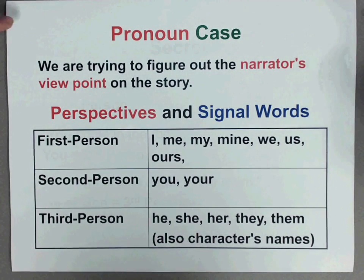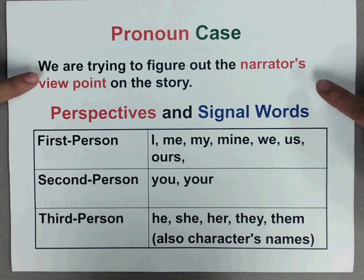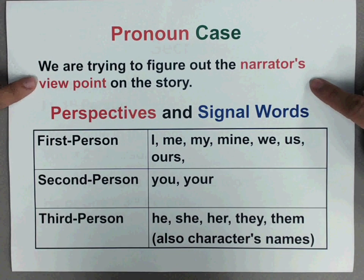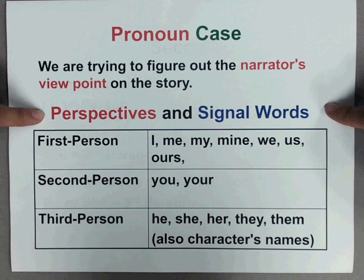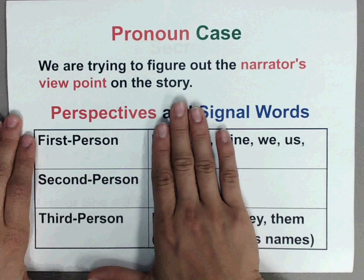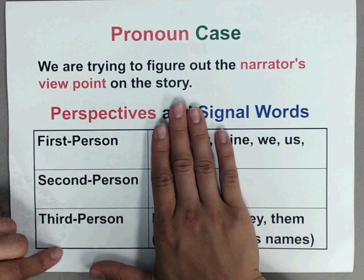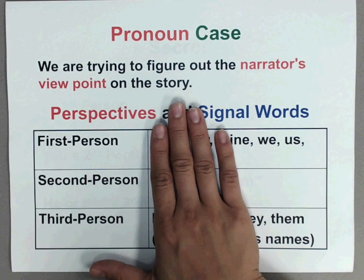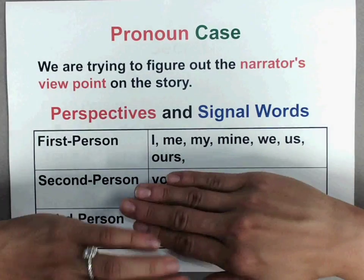So let's talk about some pronoun clues. We are trying to figure out the narrator's viewpoint on the story — perspectives and signal words. Different points of view are first person, second person, and third person. Some signal words, which are pronouns, are here.